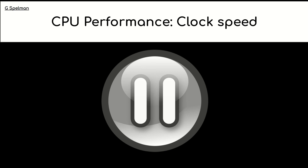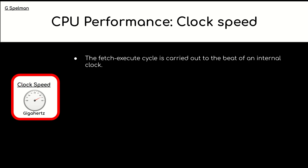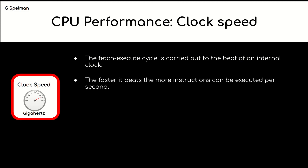CPU performance — clock speed: the fetch-execute cycle is carried out to the beat of an internal clock. The faster it beats, the more instructions can be executed per second. Clock speed is measured in hertz, for example gigahertz.